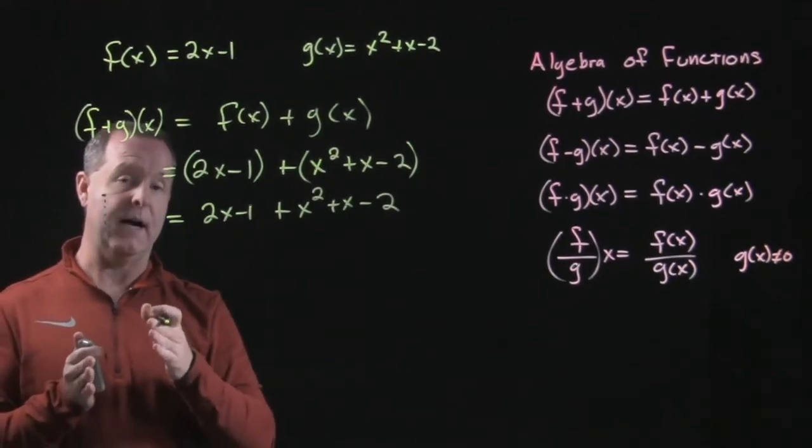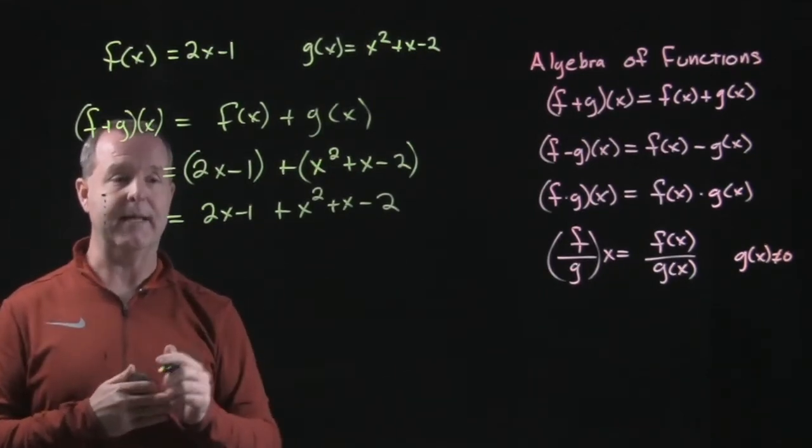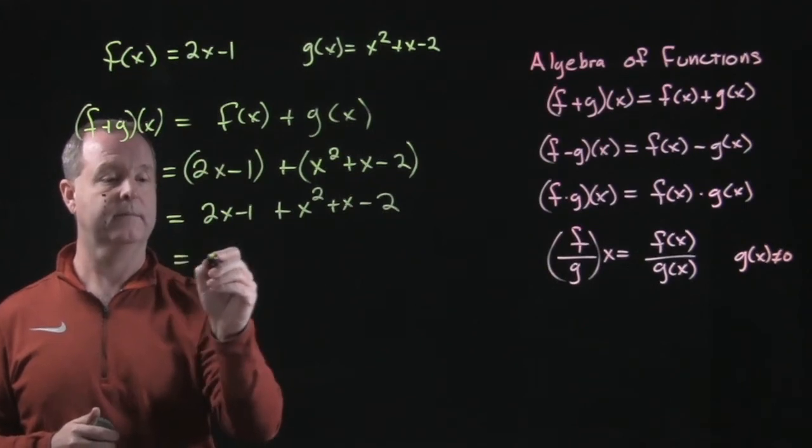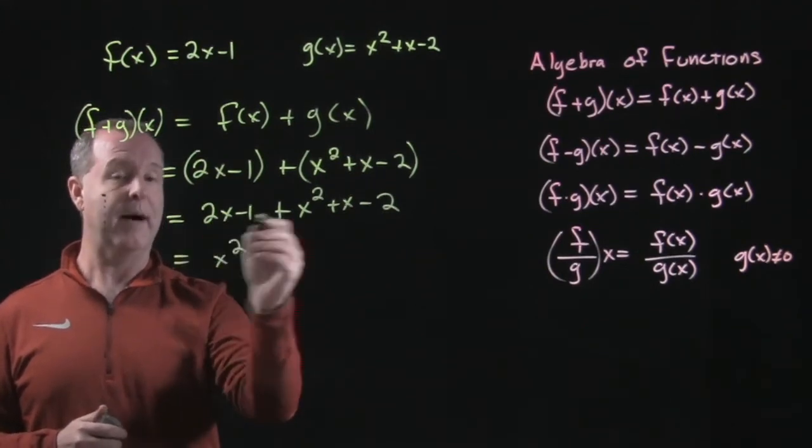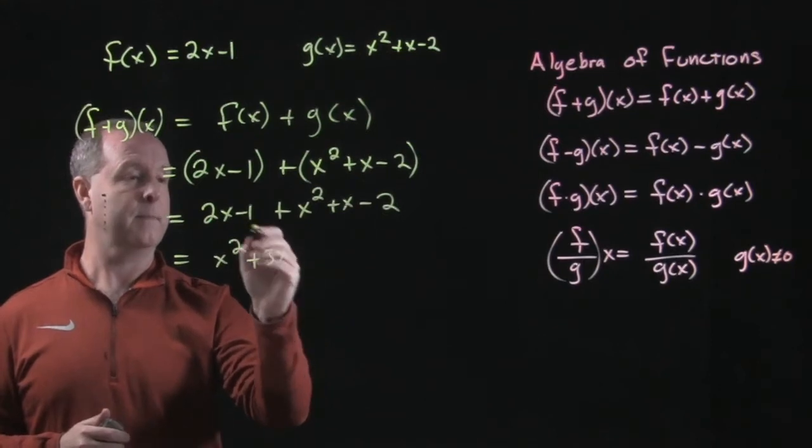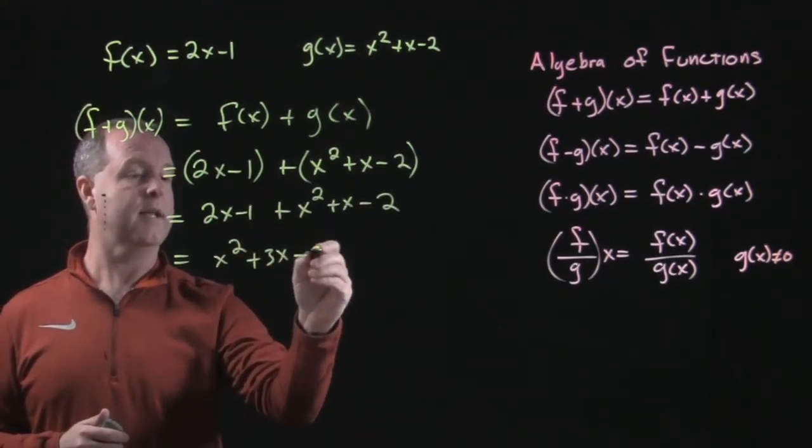Combine like terms. Typically, we'll put the highest square, or the highest index to begin with, so we have x squared. Combine my x's to be 3x, and combine my constant to a negative 3.